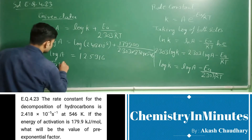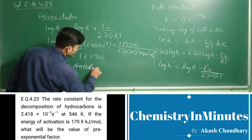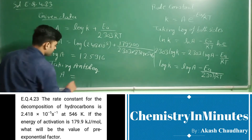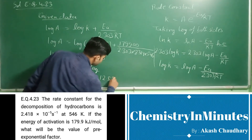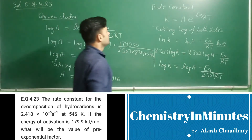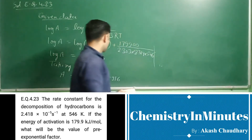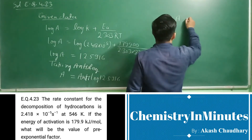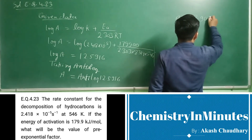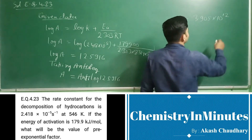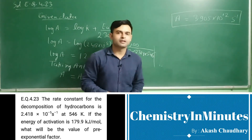Taking the antilog: A is equal to antilog of 12.5916. The antilog of 12.5916 is 3.905 into 10 raised to the power 12 per second. This is the value of the pre-exponential factor and this is the answer to the question.